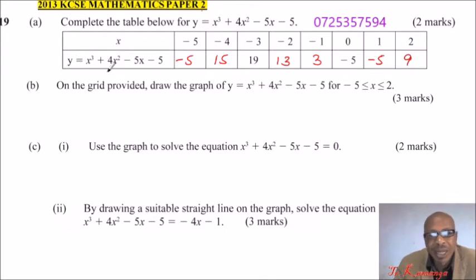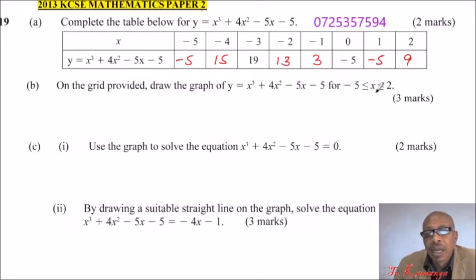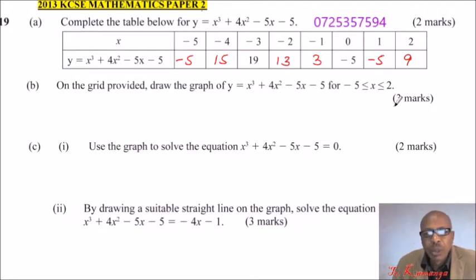You can use your calculator for all substitutions, but be very careful — if you get one value wrong, you will not get the correct answers. Part B: on the grid provided, draw the graph of y equals x cubed plus 4x squared minus 5x minus 5 for minus 5 less than or equal to x less than or equal to 2. This is the range. When you fill in these values correctly, you get 2 marks.